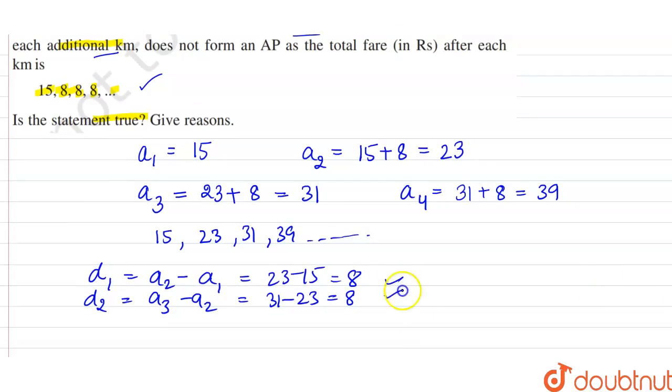Now you can see the common difference is same in this series. The common difference is 8, which is same in this AP. So we can say that this is forming an AP as the common difference is same.